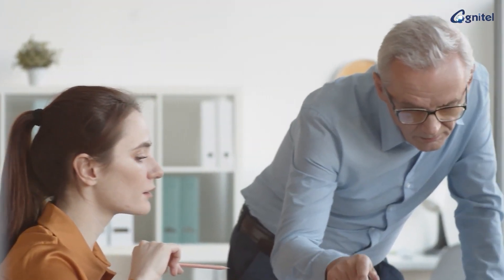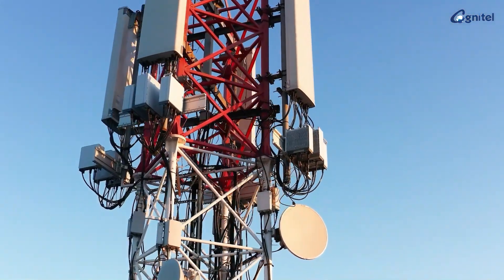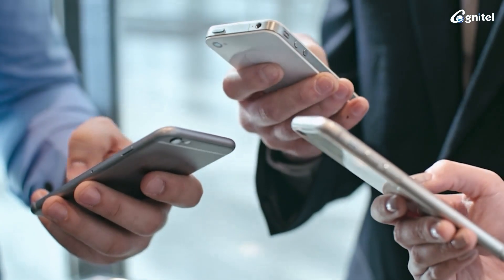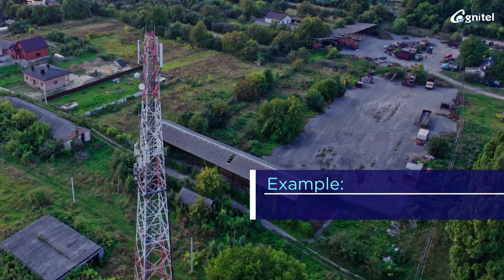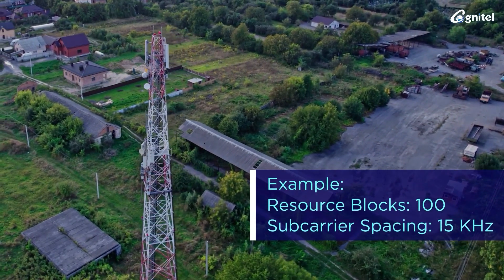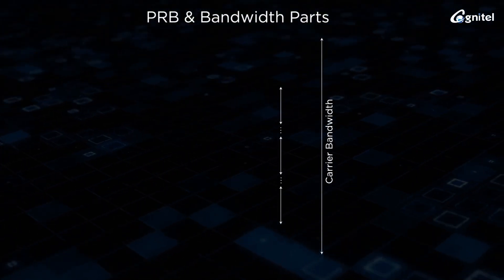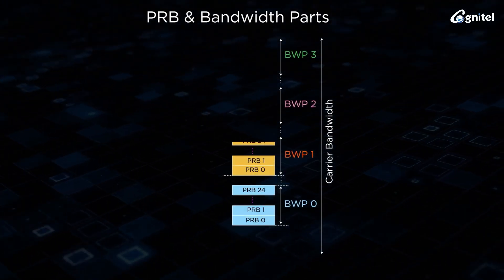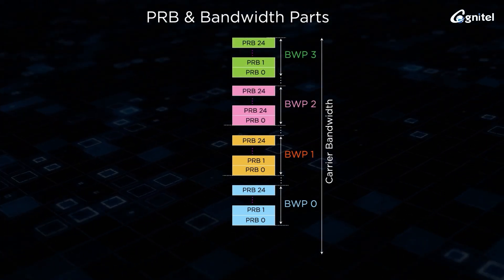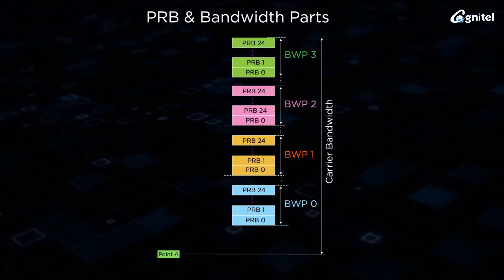An operator could choose one or more sub-carrier spacing blocks for actual data transmission in these bandwidth parts. A cell may have many sub-carrier spacings and a UE device is not required to transmit or receive the entire band. For example, an operator has 100 resource blocks of 15 KHz carrier spacing. The overall carrier bandwidth is divided into 4 bandwidth parts — BWP 0 to 3 — where each bandwidth part has 25 PRBs numbered from 0 to 24, but for UE devices to get synchronized a reference point needs to be fixed.